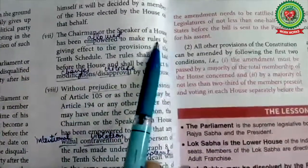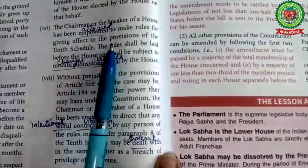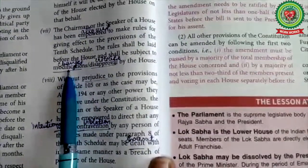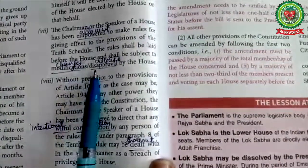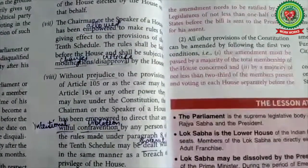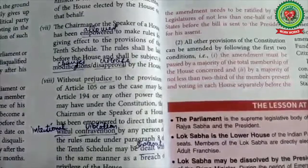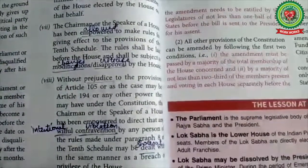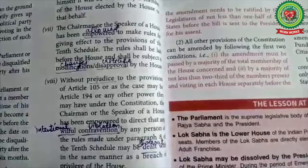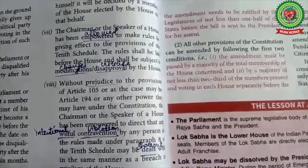The Chairman or the Speaker of a house has been empowered — empowered means allowed — to make rules for giving effect to the provisions of the 10th schedule. The rules shall be laid before the house and shall be subject to modifications — modification means changes — or disapproval — disapproval means criticized — by the house. The rules made shall be laid before the house for a total period of 30 days, which may be comprised in one session or two or more successive sessions, and shall take effect upon the expiry of the said period of 30 days unless sooner approved with or without modifications, or disapproved by the house.